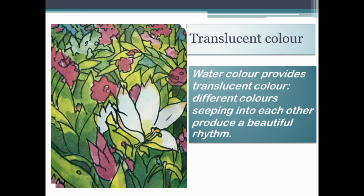The last picture is drawn using watercolor. Watercolor provides translucent color, and different colors seeping into each other produce a beautiful rhythm. In this figure, hei-ching the bulk of the picture with a light green color, then hei-ching the flowers with a strong and light rhythm separates the flowers from the leaves. The image is finished using dark green hei-ching.